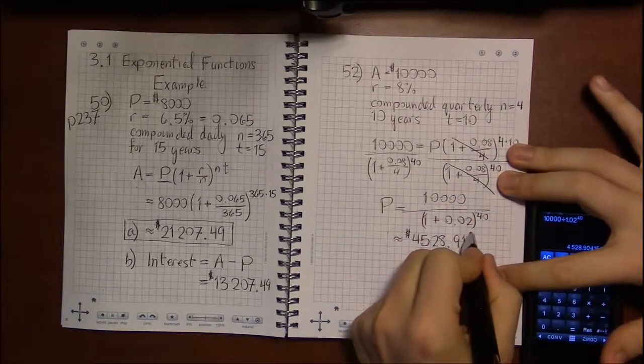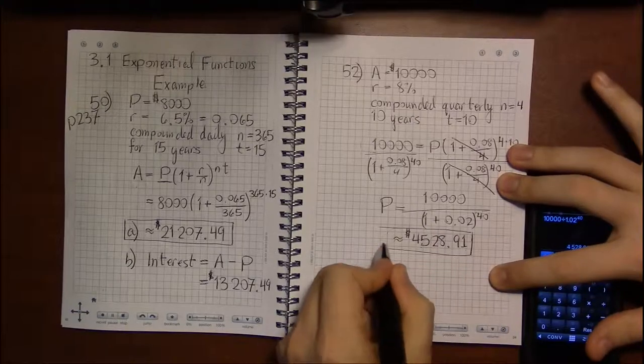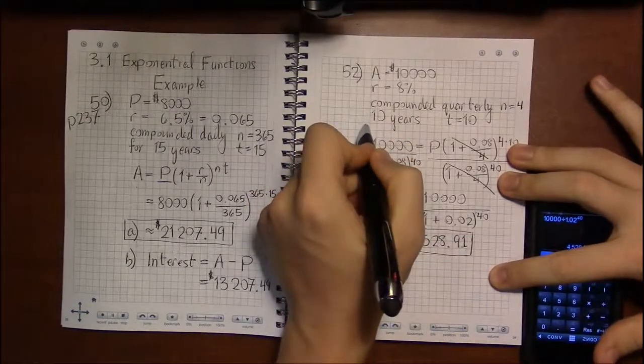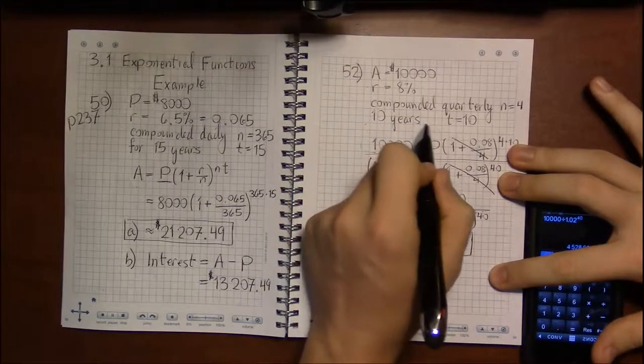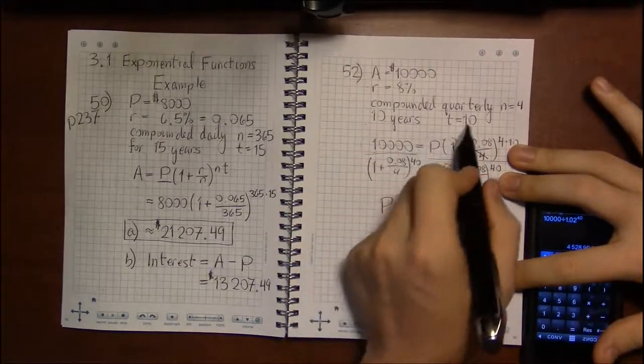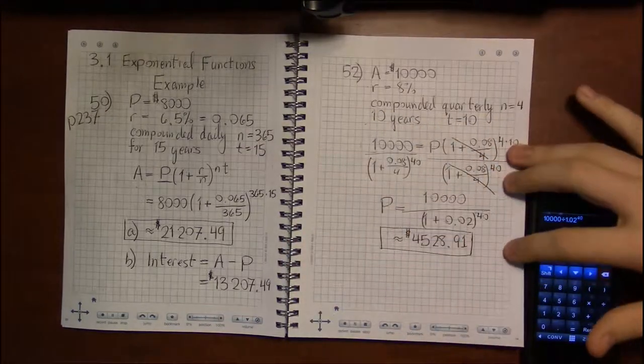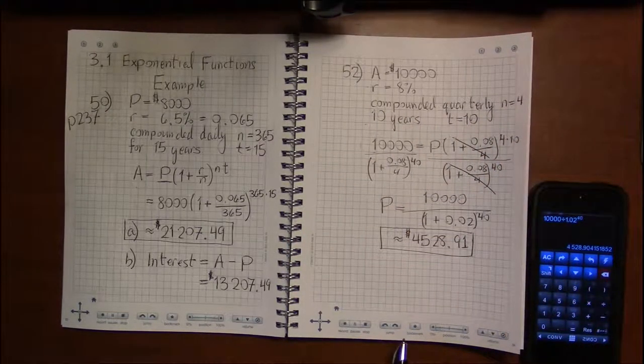So this tells us how much we should invest now given a goal and the interest rate, how many years we're going to leave the account alone, and how often the account is being compounded.